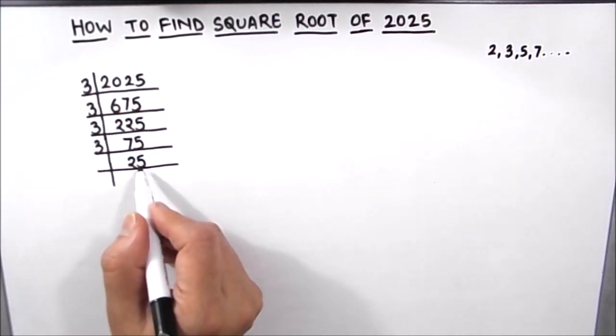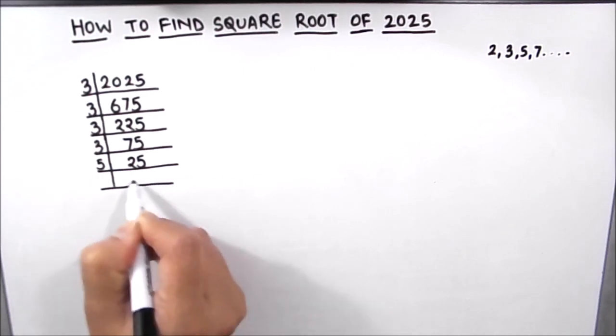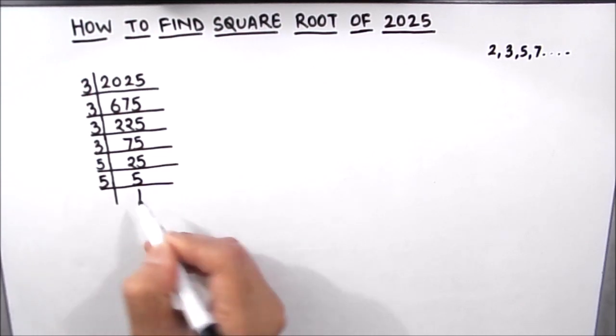Now 25 is not divisible by number 3. Let's divide it by the next prime number, 5. 5 times 5 is 25, and then 5 times 1 is 5.